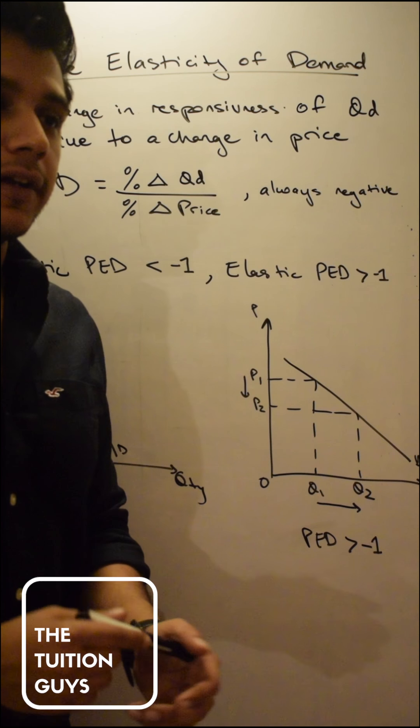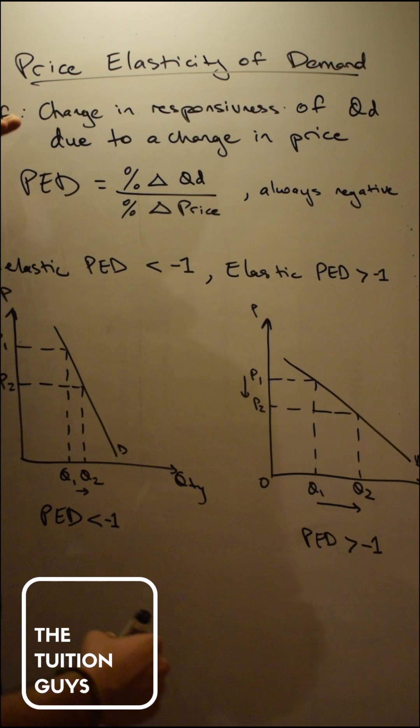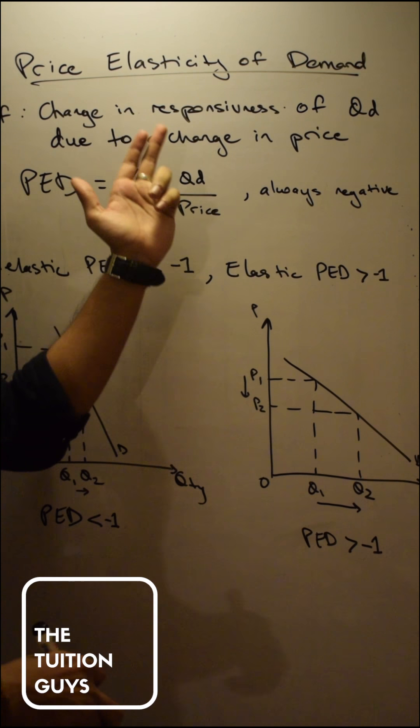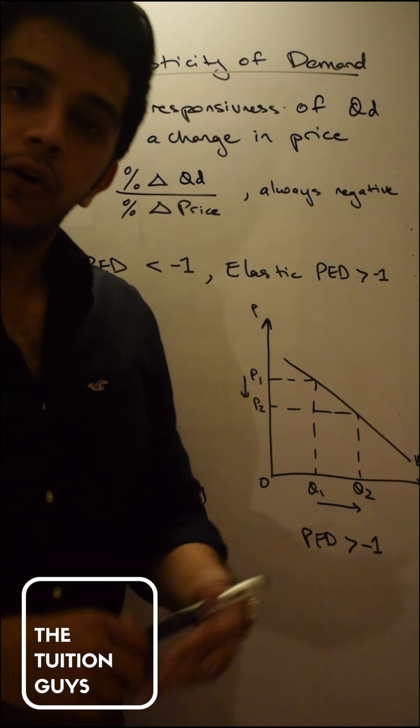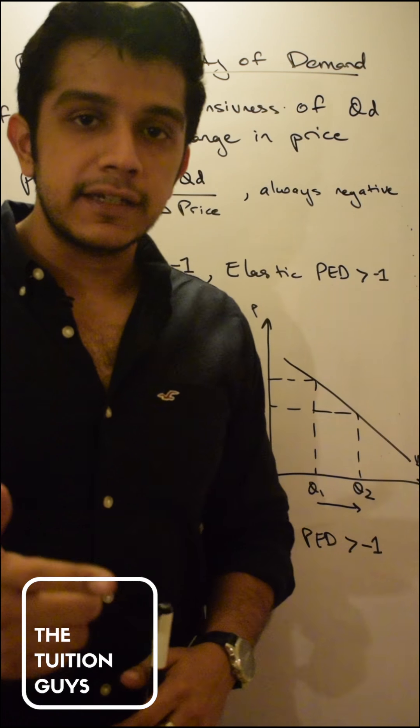That's what we're going to be talking about. Elasticity is defined as the change in responsiveness of quantity demanded due to a change in price. What does that mean? To what extent is, because of a rise or a fall in price, my quantity increasing and by what proportion?